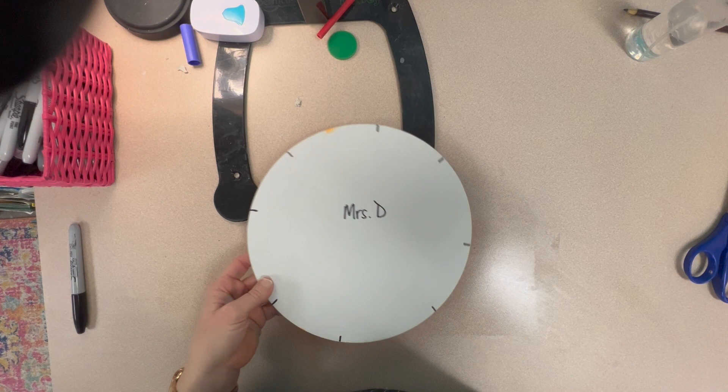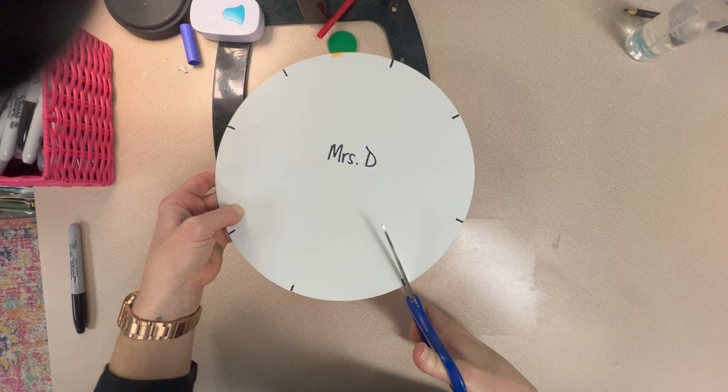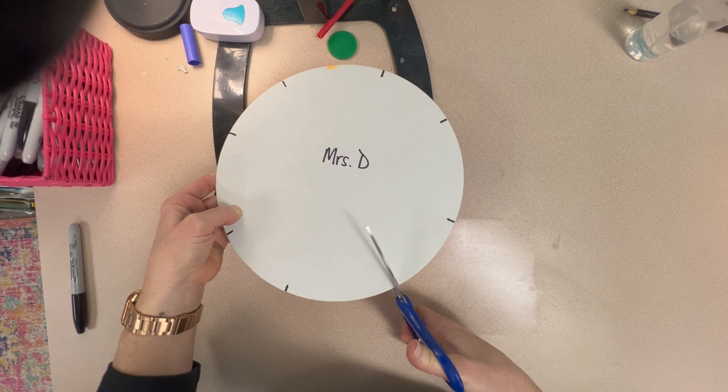Now that you've made the marks on each of the big marks on the template, you are going to use a pair of scissors and cut just a little bit, like a half of an inch, little spot on each of the lines that you made.